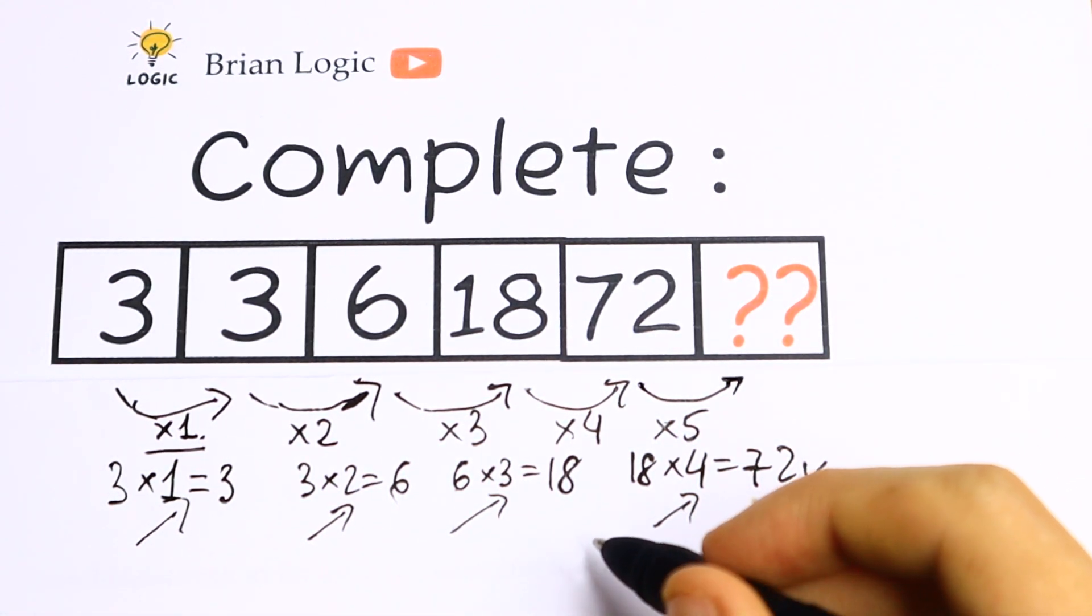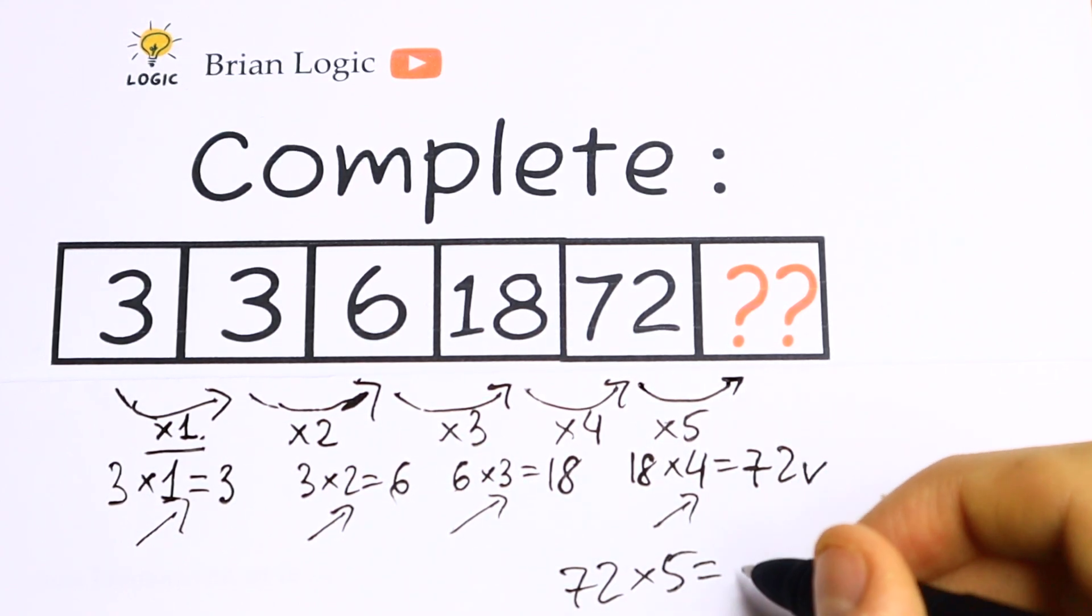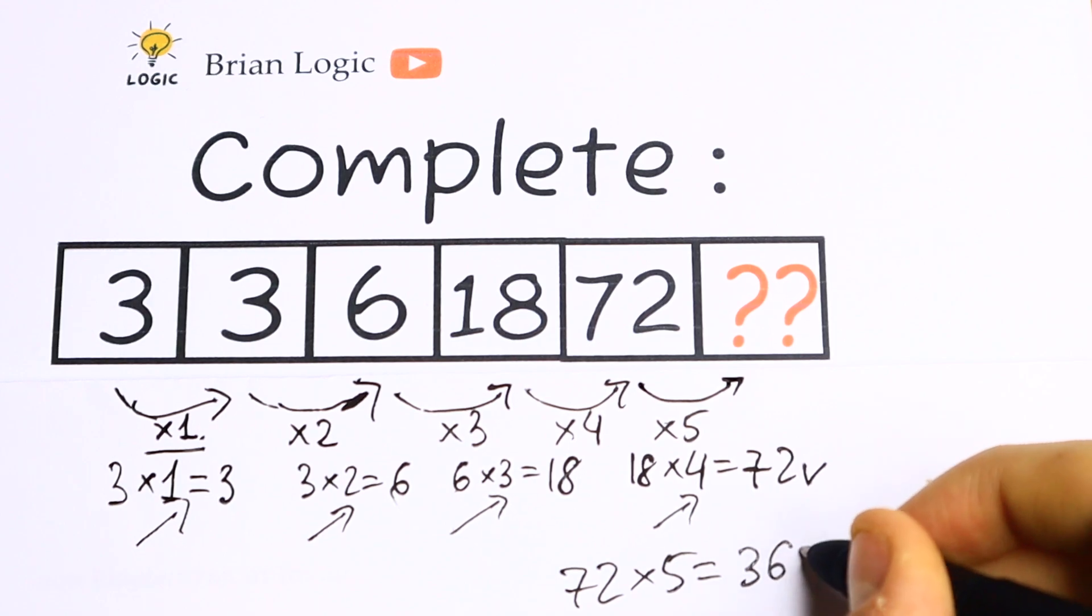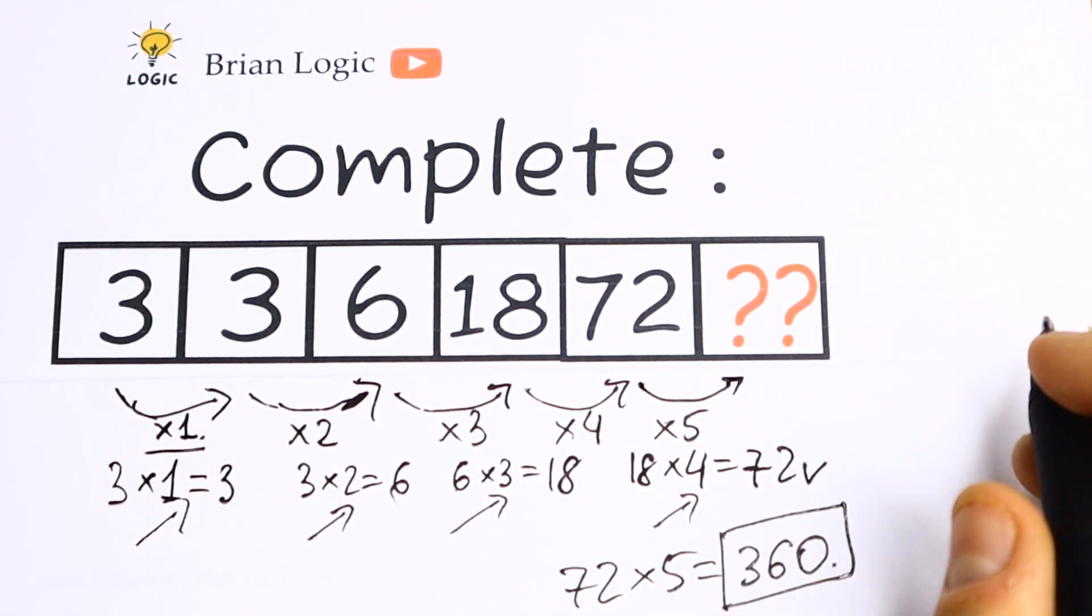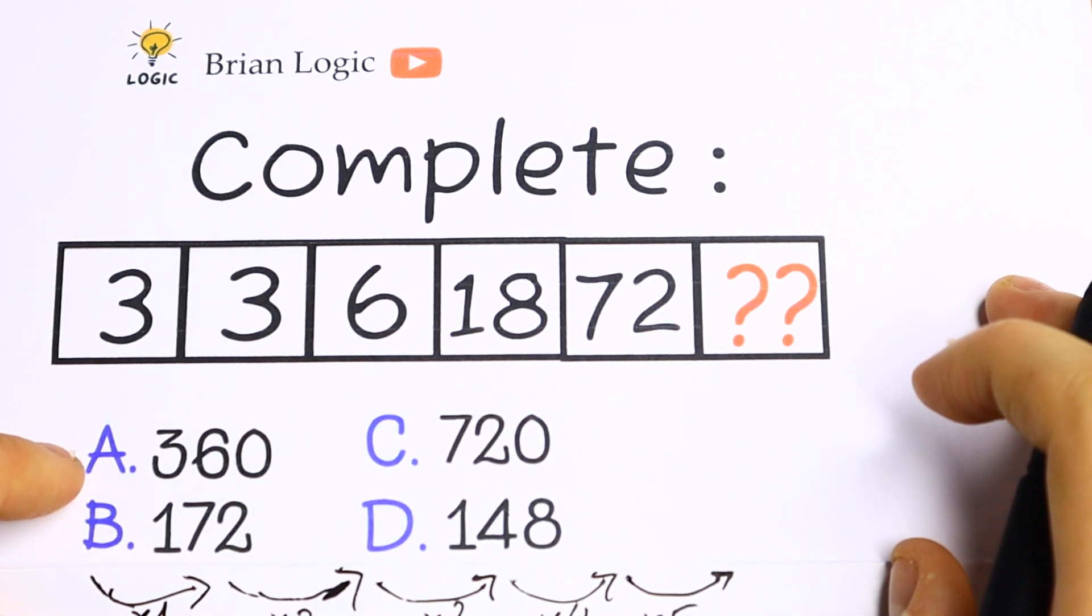It's not hard to calculate this. 72 times 5 equals 360, and that will be our answer. 360 is our answer, option A.